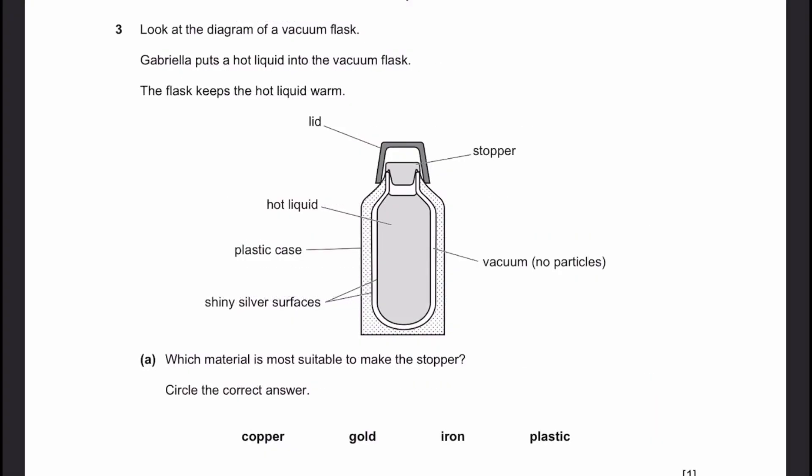Let's go to question 3. Look at the diagram of a vacuum flask. Gabriela puts hot liquid into the vacuum flask. The flask keeps the hot liquid warm. Part A: Which material is most suitable to make the stopper? So, circle the correct answer. Well, the main thing which is required is that the stopper has to be unreactive and should not conduct thermal energy. So, because it should not conduct thermal energy, it cannot be these metals. So, it's either gold or plastic. But since they asked which material is most suitable to make the stopper, of course, it can't be gold because gold is too expensive. So, of course, it's plastic.